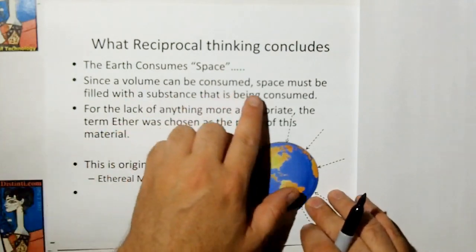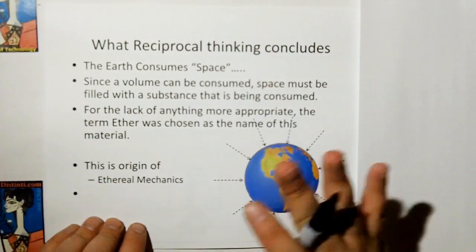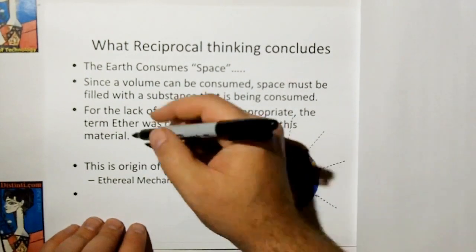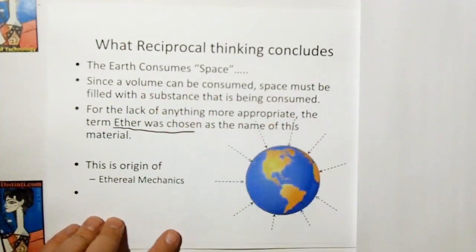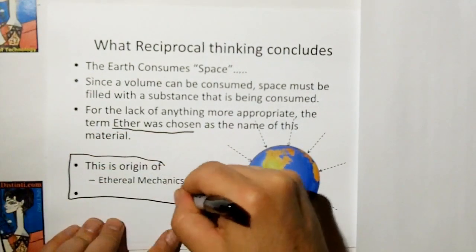If this cannonball is accelerating through space, then this cannonball has to be accelerating through space. The acceleration relative to space is the cause of inertia. And we're going to show that perhaps the Earth consumes space. Since volume can't be consumed, space must be filled with a substance that is being consumed. For lack of anything more appropriate, the term ether, I chose the term ether to name this material. This is the origin of ethereal mechanics.